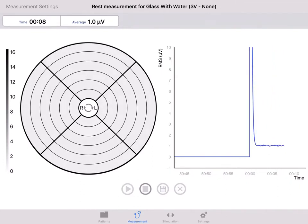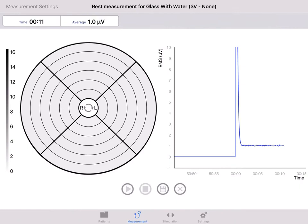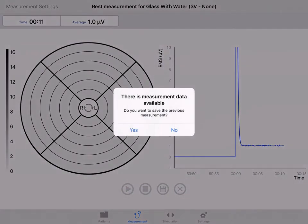To stop the measurement, select the stop button. A new measurement can be started immediately by pressing the start button again. The system will ask you whether or not to save the previous measurement.